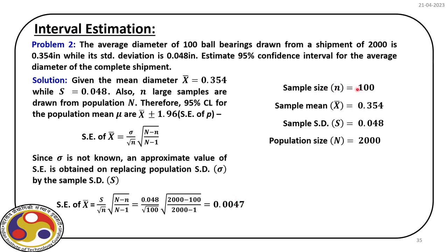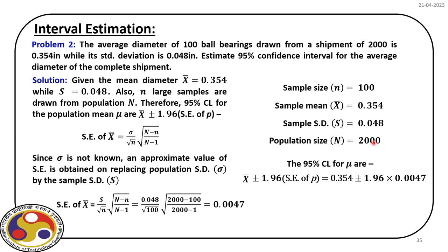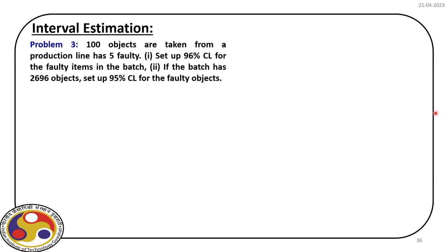In this case, sample size n = 100, sample mean = 0.354, sample standard deviation = 0.048, and population size N = 2000. For the 95% confidence limit for the average diameter of the population, using all these estimated values, the 95% confidence interval is 0.3448 to 0.3632 inches.